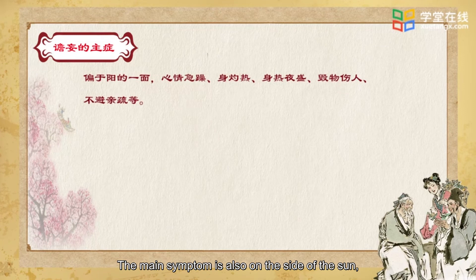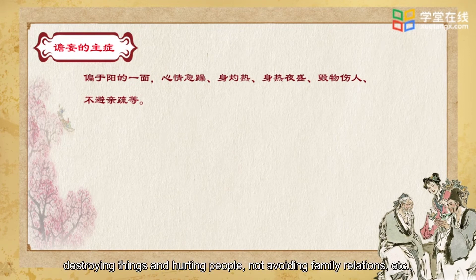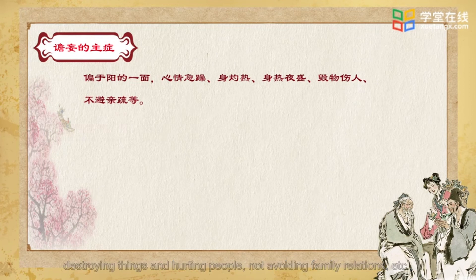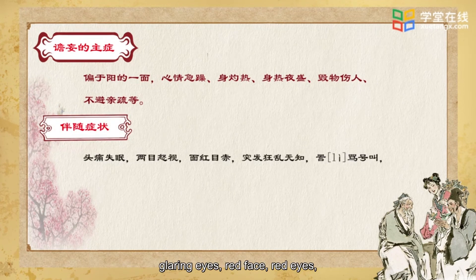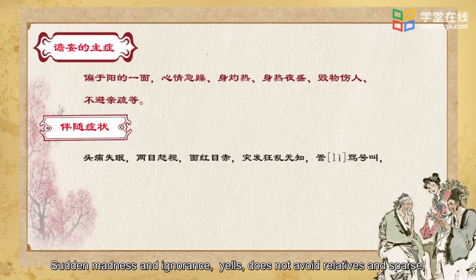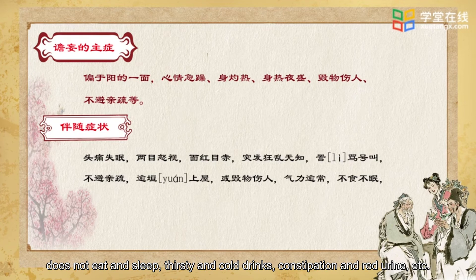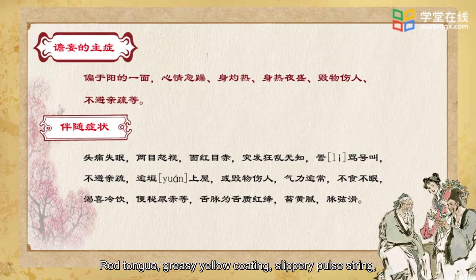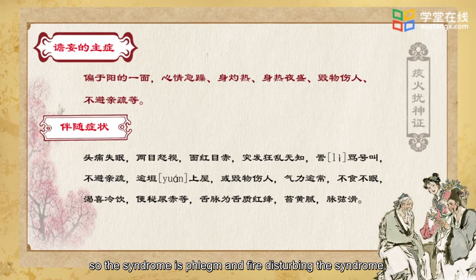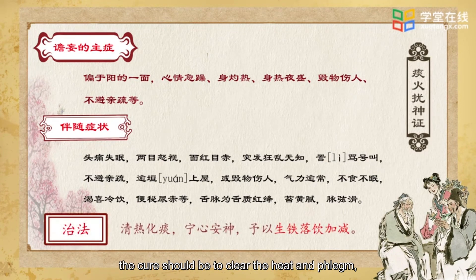If the main symptoms lean towards the active side, such as irritability, body burning, body heat at night, destroying things and hurting people, not avoiding family relations, etc., accompanied by headache and insomnia, glaring eyes, red face, red eyes, sudden madness, yelling, excessive strength, not eating and sleeping, thirst for cold drinks, constipation and red urine, etc., with red tongue, greasy yellow coating, slippery string pulse — the syndrome is phlegm and fire disturbing the mind. The cure should be to clear heat and phlegm, calm the mind. Give zhu tie yin (pig iron drink) with additions and subtractions.